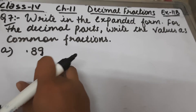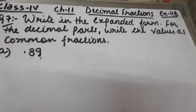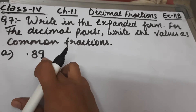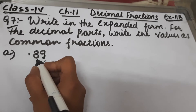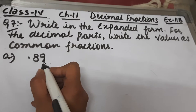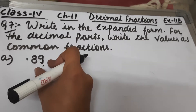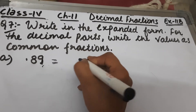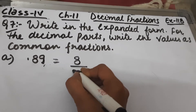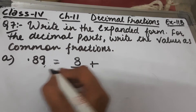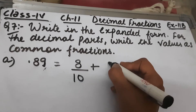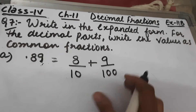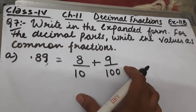Part a is 0.89. If we see the place value chart, the digit just after the decimal is the tenths place, and after that is the hundredths place. So 8 is at the tenths place, meaning 8 upon 10, and 9 is at the hundredths position, so this will be 9 upon 100. This is the expanded form of 0.89.